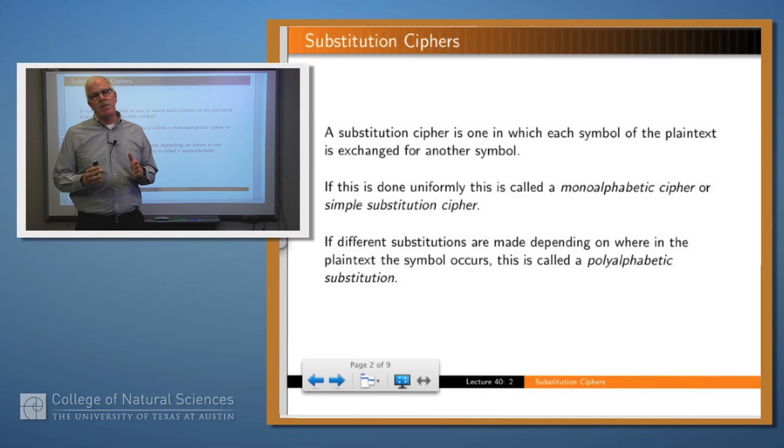You might also have a substitution cipher in which you don't do things uniformly, that you replace symbols in the plain text with different symbols depending upon where they are in the plain text. And if you do that it's called a polyalphabetic cipher. We'll see examples of both of those today.